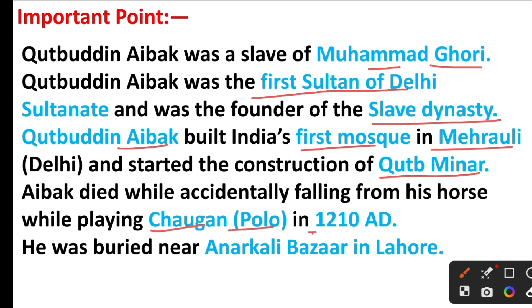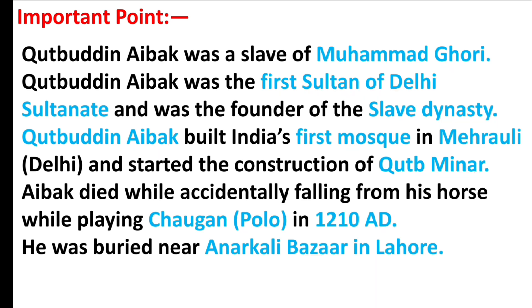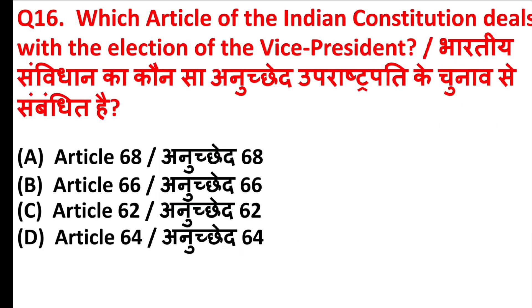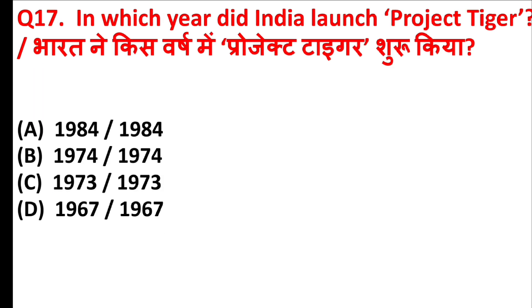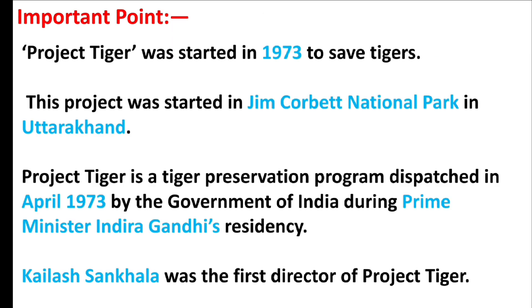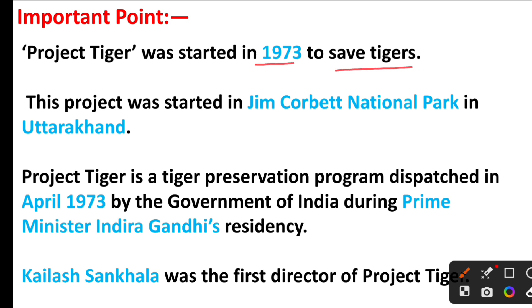Name the sultan who, because of his generosity, was also known as 'Lakh Baksh.' The right answer is option A — Qutbuddin Aibak. Qutbuddin Aibak was a slave of Muhammad Ghori and became the first Sultan of the Delhi Sultanate, founding the Slave Dynasty. He built India's first mosque in Mehrauli, Delhi, and started the construction of the Qutub Minar. Aibak died after accidentally falling from his horse while playing chogan, or polo, in 1210 AD, and was buried near Anarkali Bazaar in Lahore.